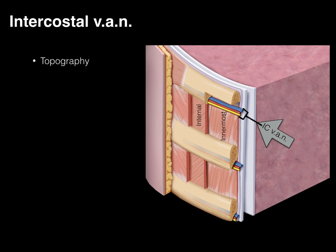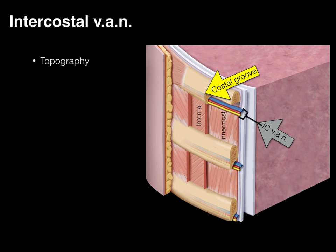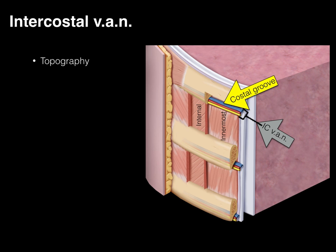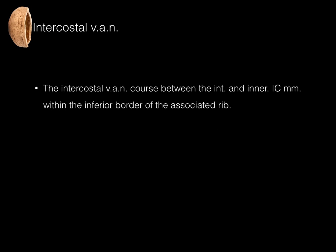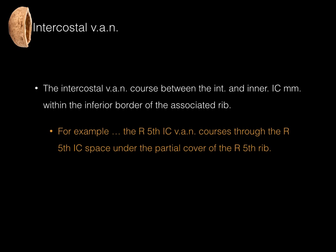The topography of the intercostal vans: they course between the internal and innermost intercostal muscles. Ghosted through the bone, you can see the blue, red, and yellow structures in the costal groove, which is the groove on the bottom of the rib. When the rib is removed, you can see the VAN coursing on the bottom of the rib in the costal groove. In summary, the intercostal VAN courses between the internal and innermost intercostal muscles within the inferior border of the associated rib. For example, the right fifth intercostal VAN courses through the right fifth intercostal space under the partial cover of the right fifth rib.